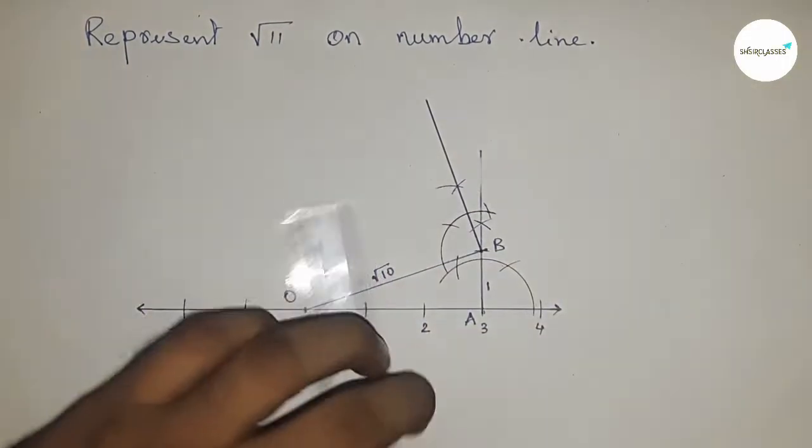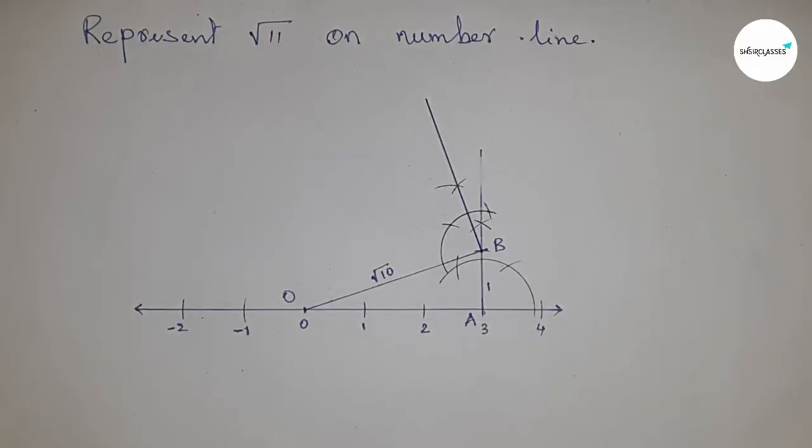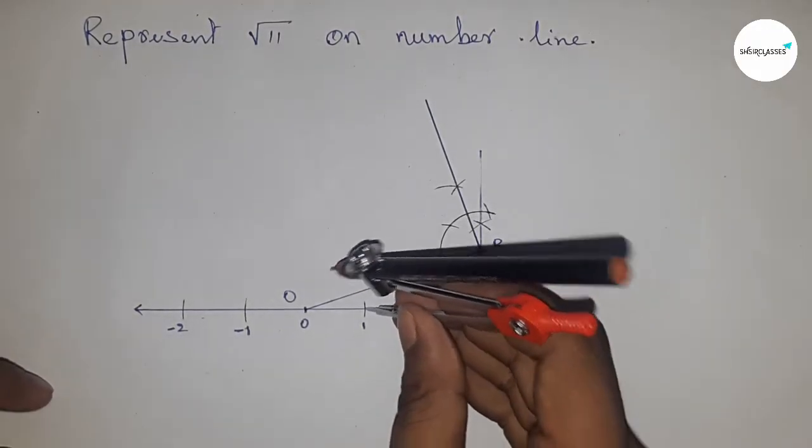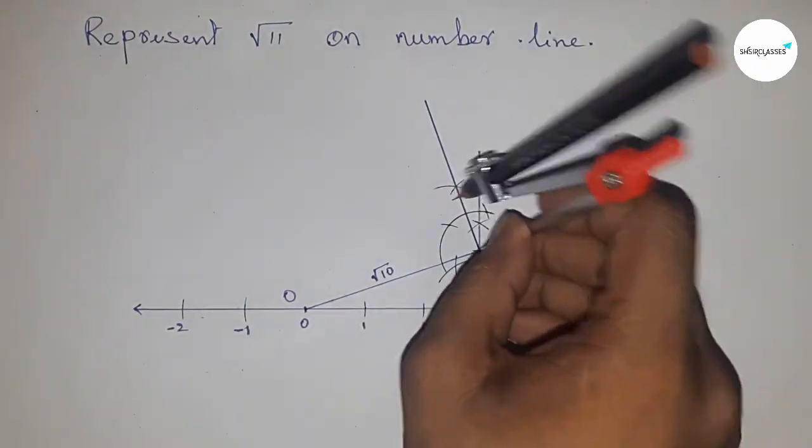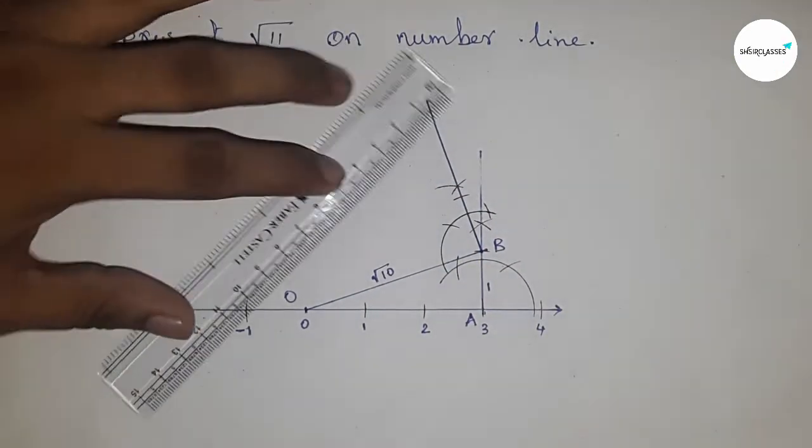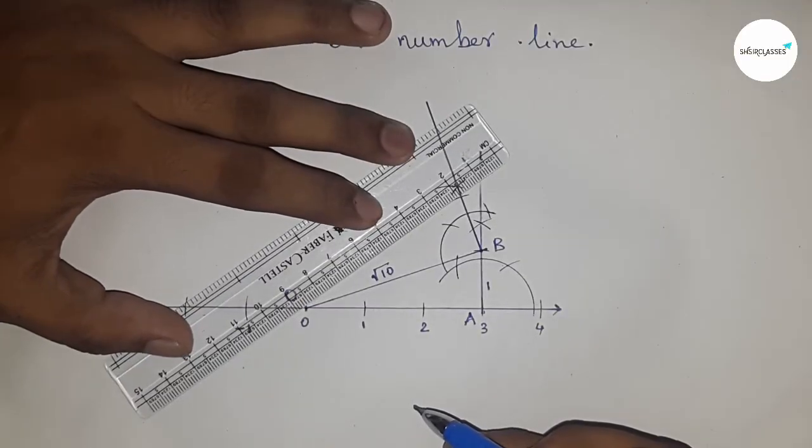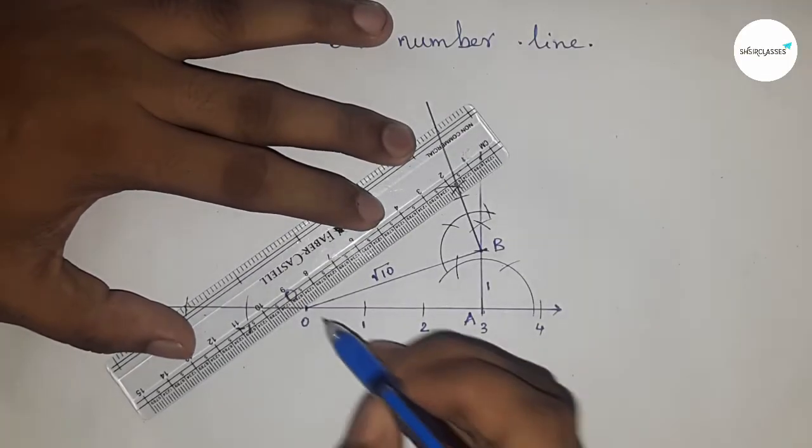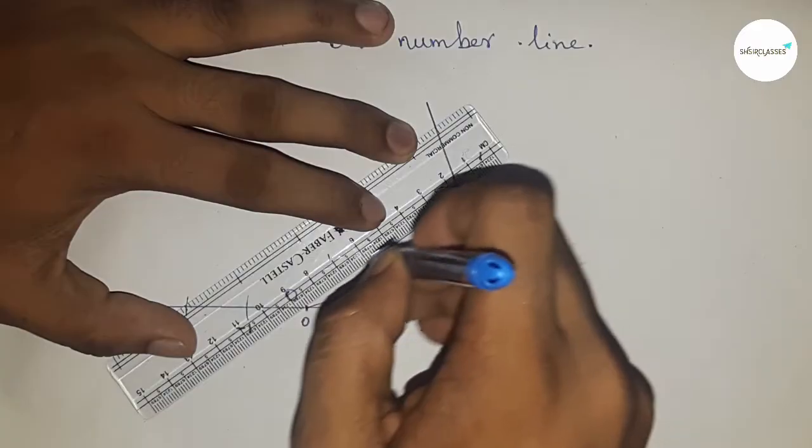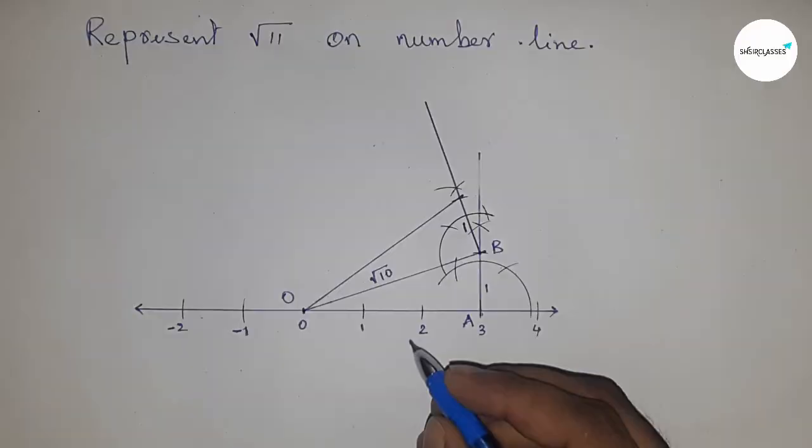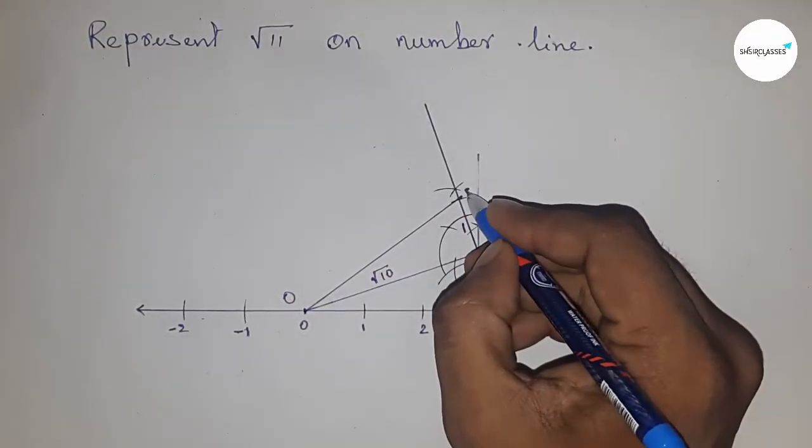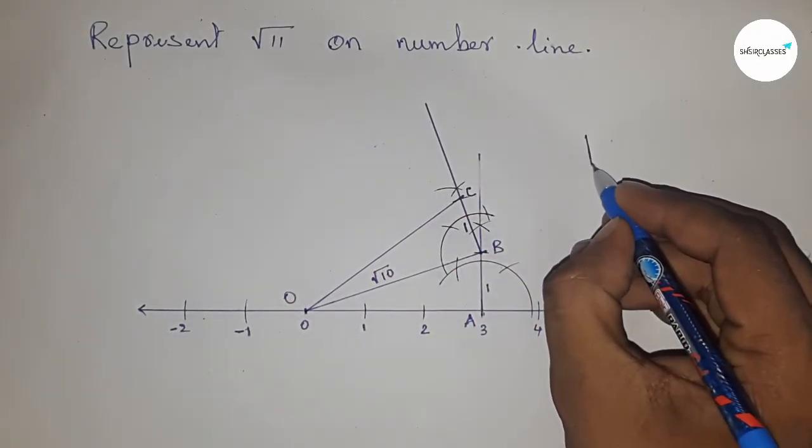We got a 90-degree angle at point B. Next, similarly take the length between any two numbers, cut the line, and join this. So this is 1 and this is point C.